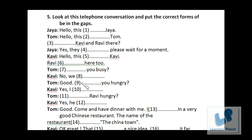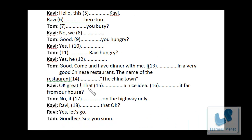Tom: Good. Are you hungry? Covey: Yes, I am. Tom: Is Ravi hungry? Covey: Yes, he is. Tom: Good. Come and have dinner with me. I am in a very good Chinese restaurant. The name of the restaurant is The China Town. Covey: OK, great. That is a nice idea. Is it far from our house? No, it isn't. It is on the highway. Covey: Ravi, is that OK? Ravi: Yes, let's go. Tom: Goodbye, see you soon. In this exercise we used negative forms like aren't or isn't and positive forms like are. This was a nice and easy exercise.